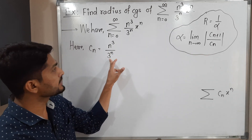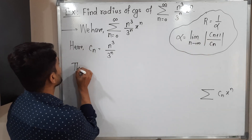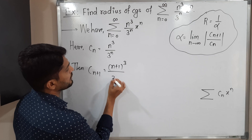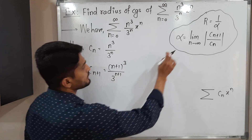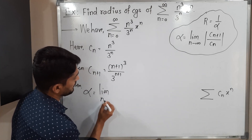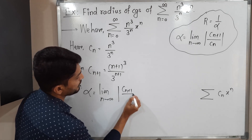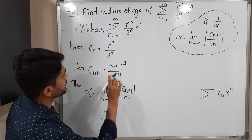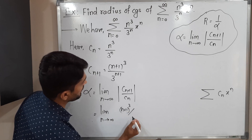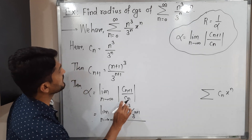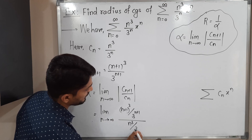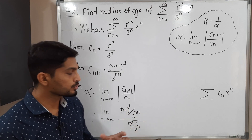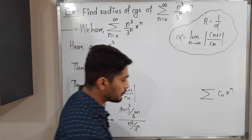We have the value of cₙ; now we need to find cₙ₊₁, which can be easily obtained just by replacing n by n+1 everywhere. So cₙ₊₁ equals (n+1)³ divided by 3^(n+1). Using the formula for α: α equals limit as n tends to infinity of |cₙ₊₁ upon cₙ|. There is no need for the modulus since all numbers are natural numbers — we are taking cubes and 3 to positive powers, so all terms are positive.